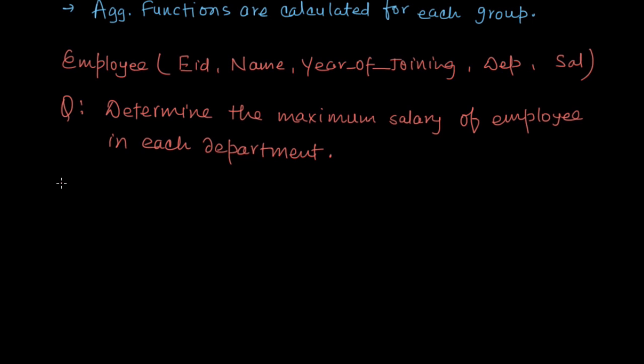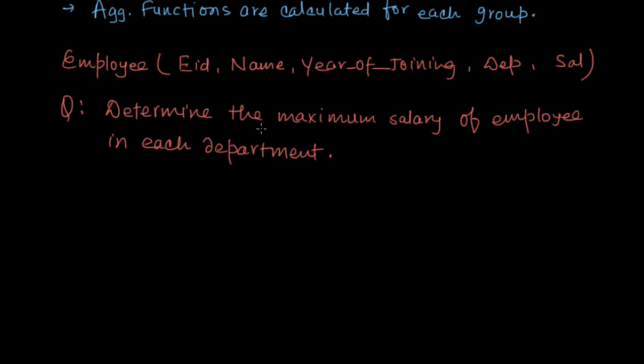Now let's see an example. Here we have table Employee in which we have attribute eid, name, year of joining, department, and salary. The query is: determine the maximum salary of employee in each department. You have to notice here it is asking for the maximum salary in each department, right, so department-wise maximum salary. So it is obvious now you can see we have to group data according to department, and then we have to find out the maximum salary. Right, and we have already learned that aggregate functions are calculated on each group.